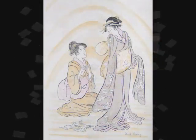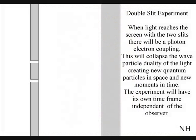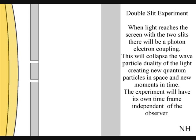The best way to see this happen directly with light is in the two-slit experiment. When the light reaches the screen with the two slits, the photons will react with the electrons of the screen. This will collapse the wave-particle duality of the light.